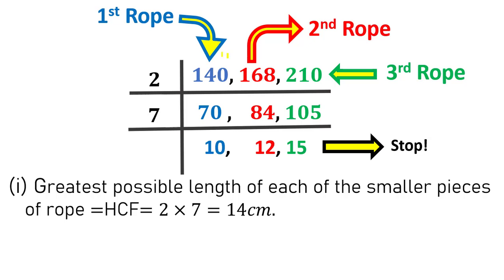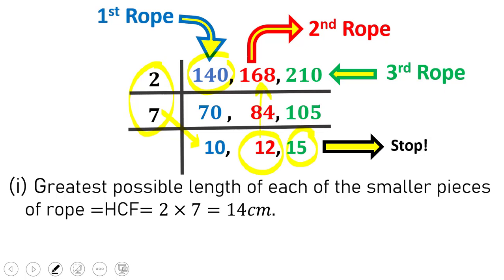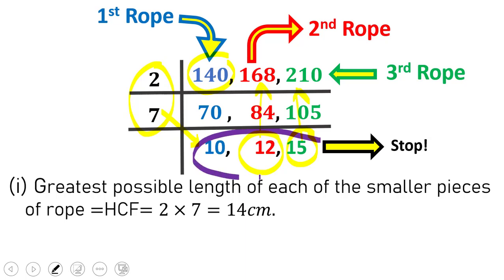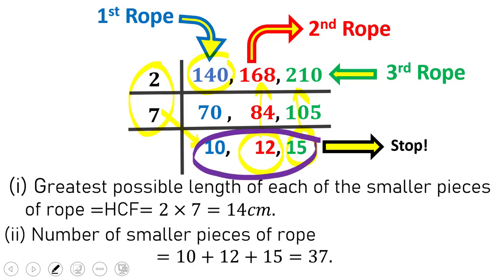Looking at the table: the first rope measures 140 cm. When we divide it into smaller pieces of 14 cm each, we get 10 small pieces. Similarly, we get 12 small pieces when we divide the second rope, and we get 15 smaller pieces out of the third rope. So the total number of smaller pieces is 10 + 12 + 15, which is 37. We can get 37 smaller pieces from the three ropes.